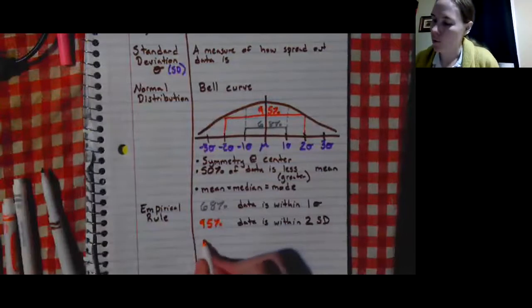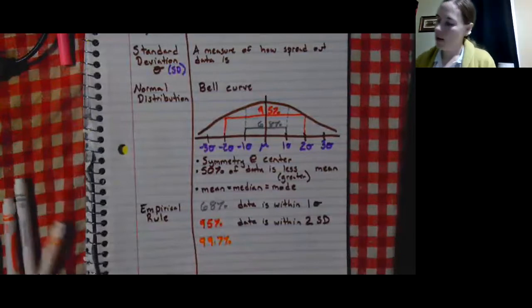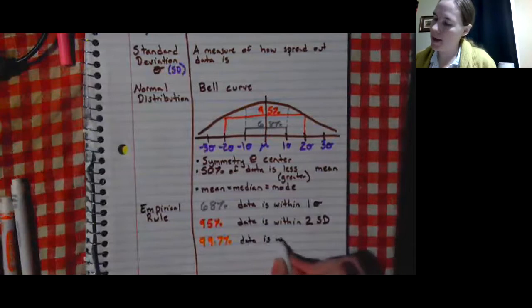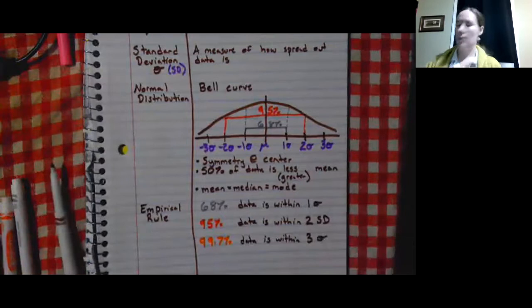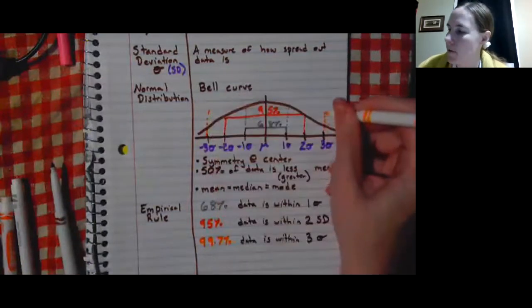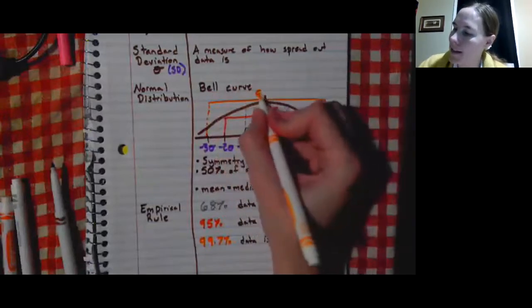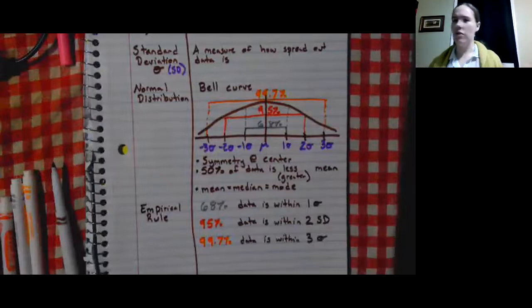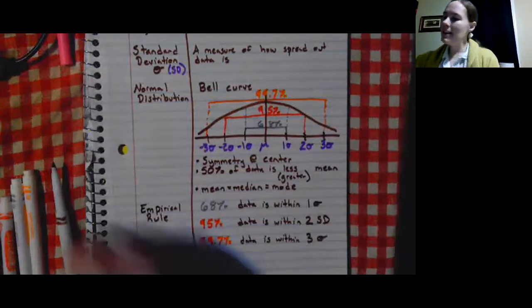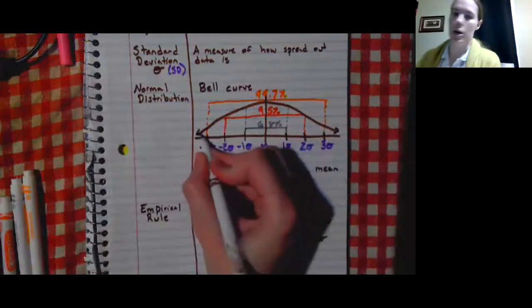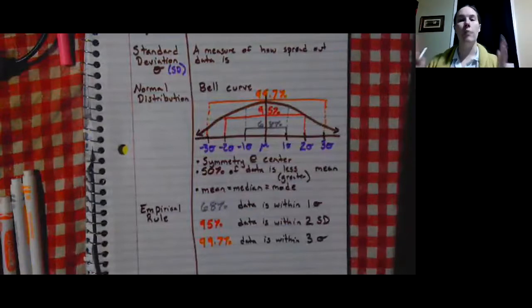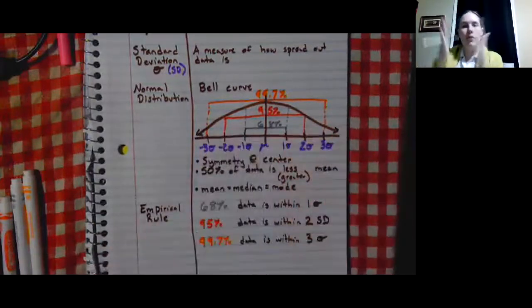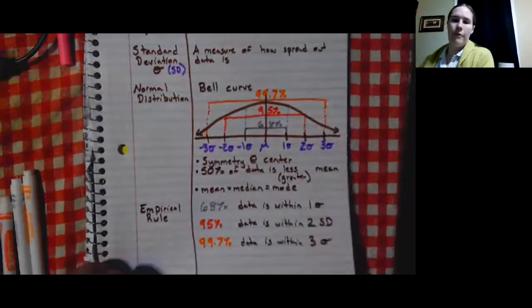The next part of the empirical rule is 95% — 95% of your data is within two standard deviations, from negative two to positive two. The last part is 99.7% of your data is within three standard deviations, from negative three to positive three. The tails technically go on forever, so the entire bell curve is out of 100%, but the empirical rule focuses on these first three standard deviations where the majority of the data lies.